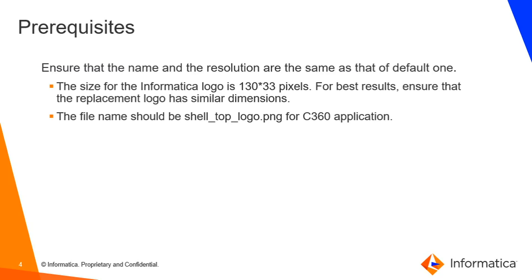Prerequisites: Ensure that the name and the resolution are the same as that of the default one. The size for the Informatica logo is 130 by 33 pixels. For best results, ensure that the replacement logo has similar dimensions. The file name should be shell_top_logo.png for the C360 application.